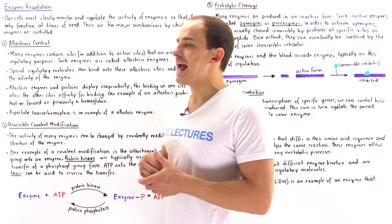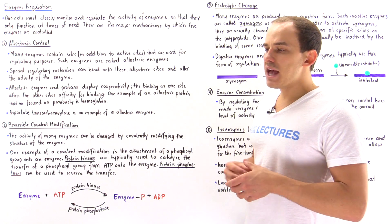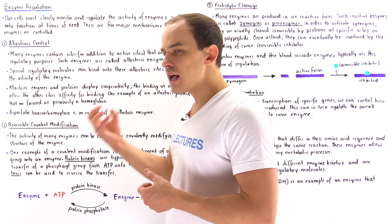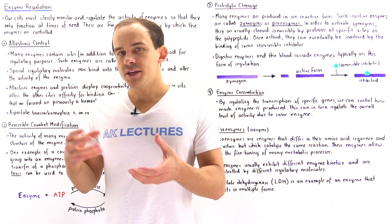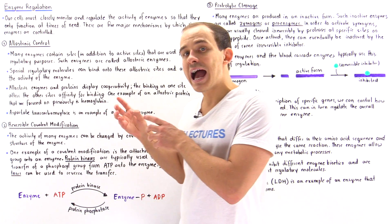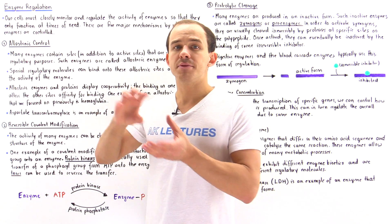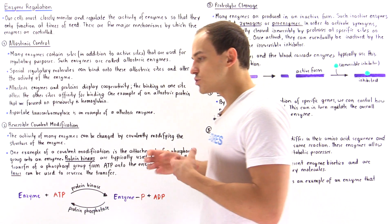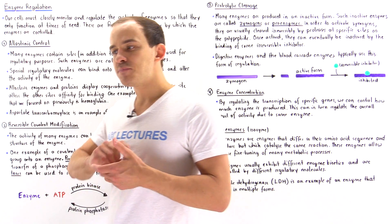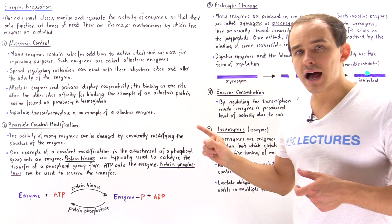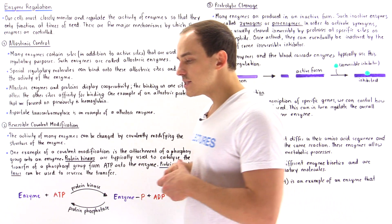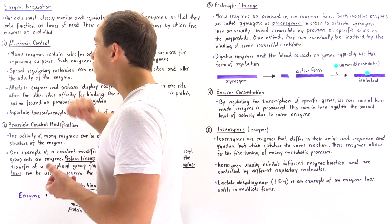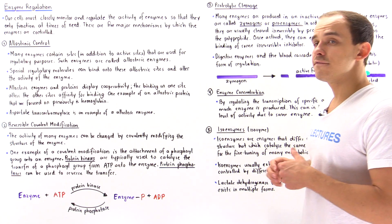Let's begin by focusing on allosteric control. Many of the enzymes produced inside our cells contain regions called allosteric sites. These allosteric sites are different from the active sites that bind the substrate molecule. Special signal molecules and regulation molecules found inside our body can bind onto these allosteric sites, and by binding they can create some type of change that alters the activity and functionality of the enzyme.